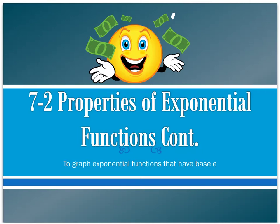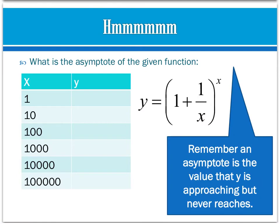We're going to continue talking about the properties of exponential functions. I want us to look at what happens whenever we start to increase the value of x in this function. The more we increase x, our function is going to begin to approach the asymptote — a value that y gets very, very close to as x becomes large. We'll fill in this chart to see what happens as x increases.